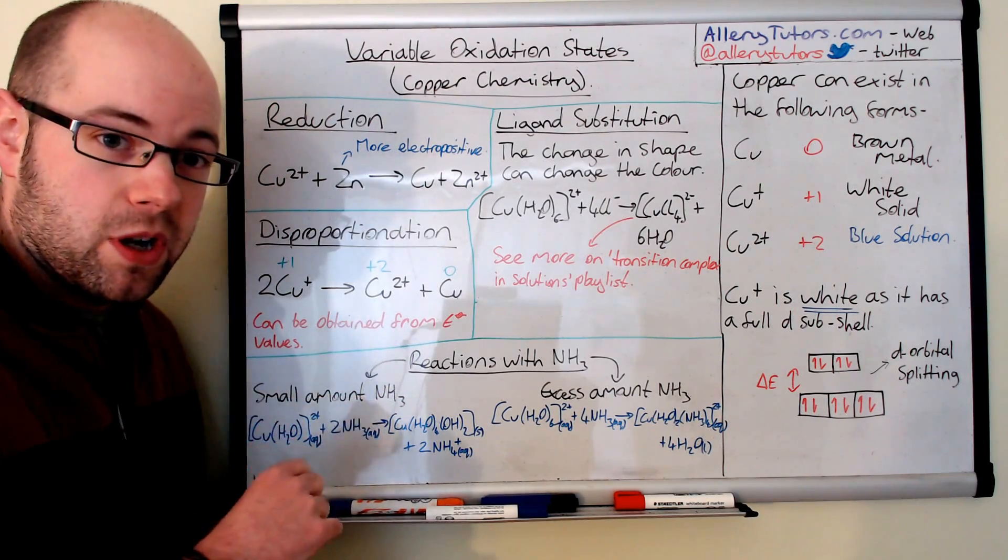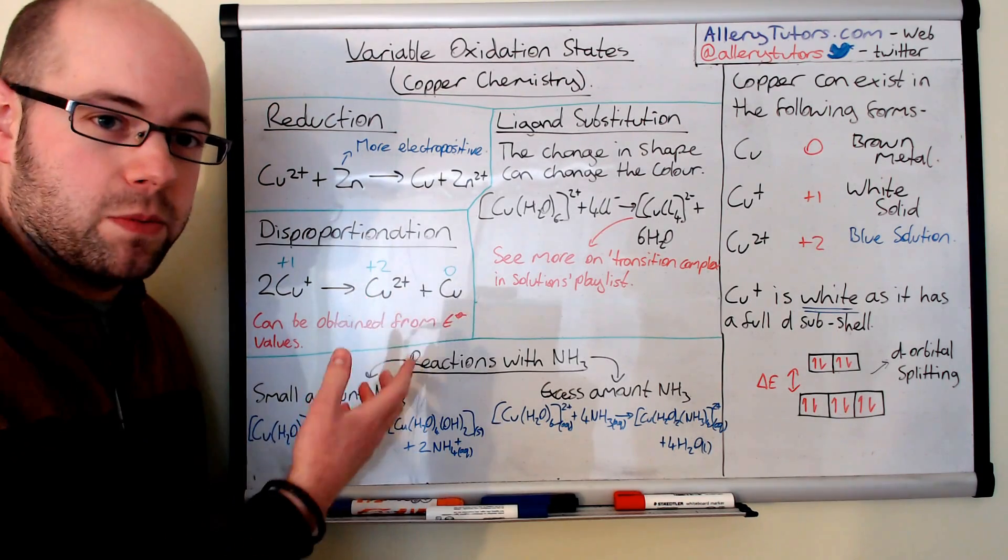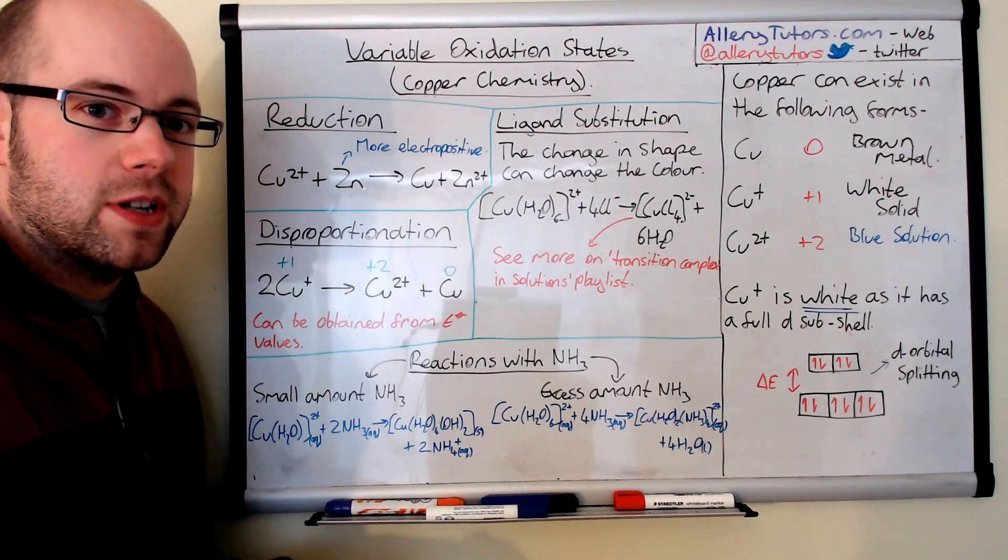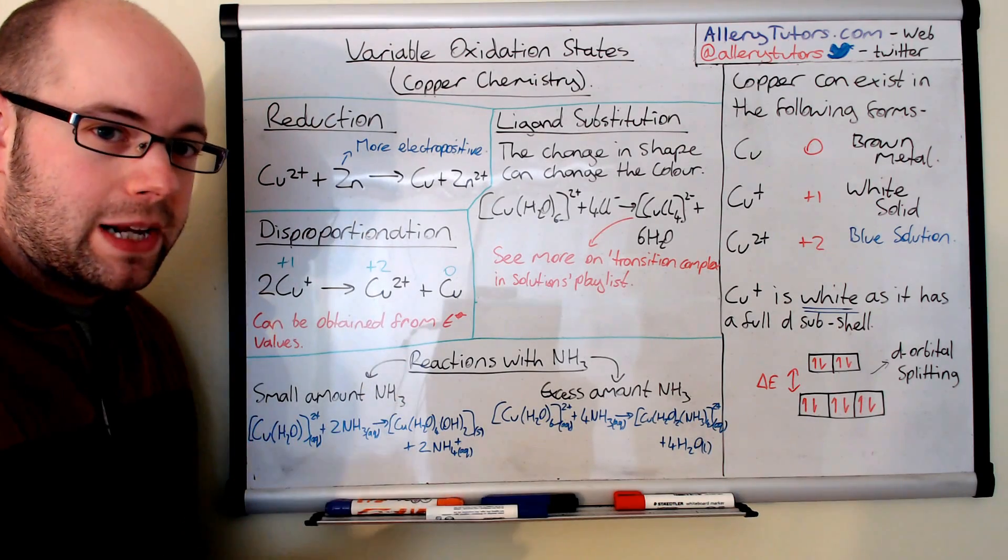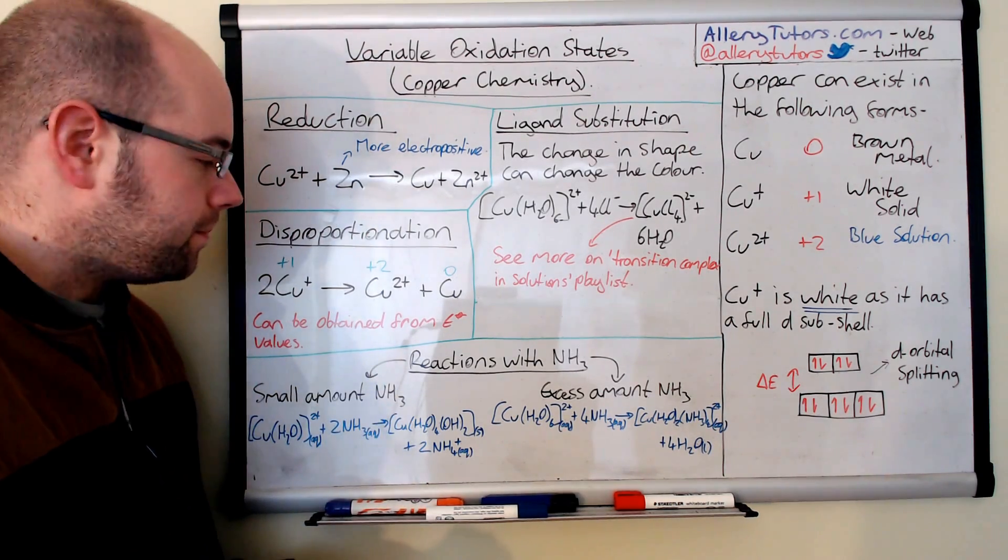And we take the two E naught values of the copper half cells, we combine them and form this ionic equation, and that proves that we have a disproportionation reaction. Now if you want to know about the E naught chemistry, or effectively what we call electrode potential chemistry, then if you just have a look at a playlist to do with electrochemistry, you'll see more on that there as well.